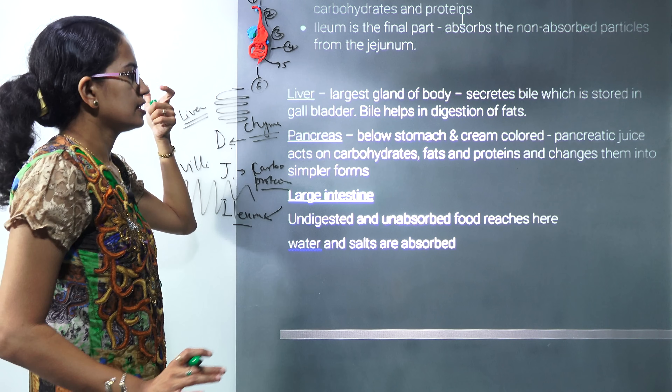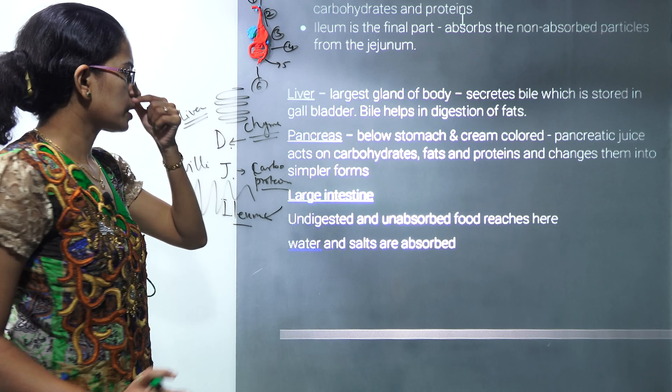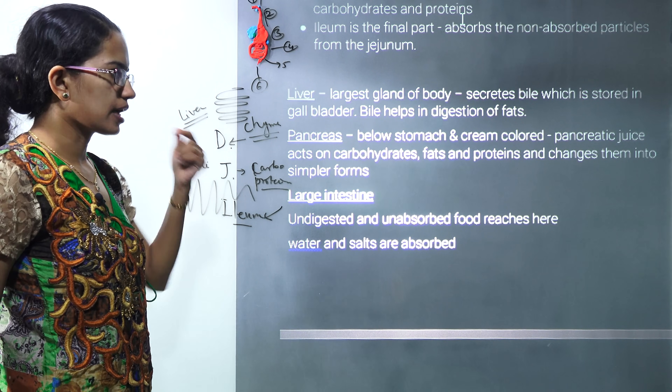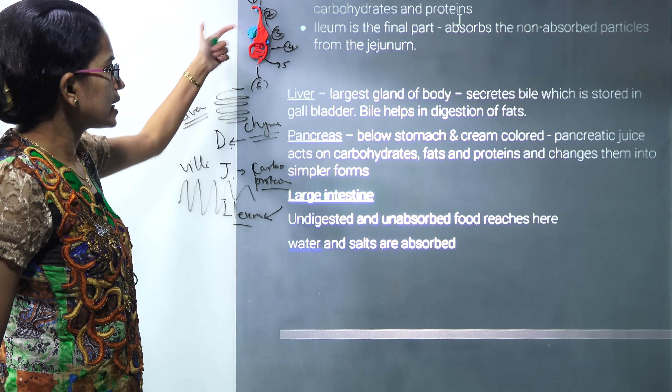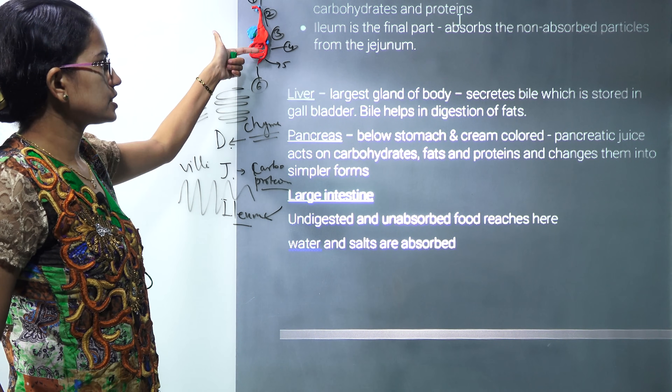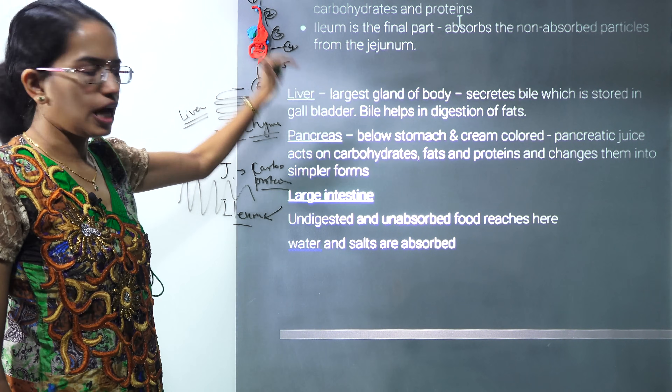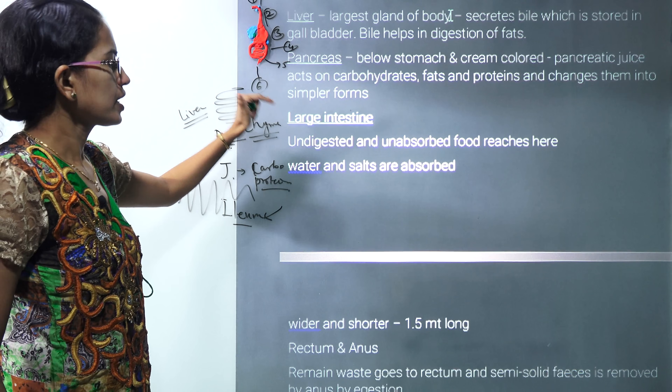The small intestine is nearly 7.5 meters long and highly coiled, allowing it to fit in a small space. It has villi — small finger-like structures — that increase the surface area, allowing faster absorption of food. It is supported by enzymes from the liver and pancreas. The gallbladder stores bile which helps in digestion of fat, and the pancreas acts on carbohydrates and proteins.